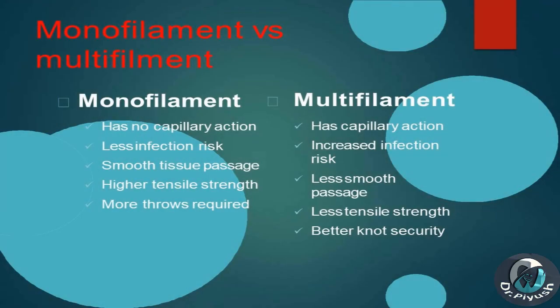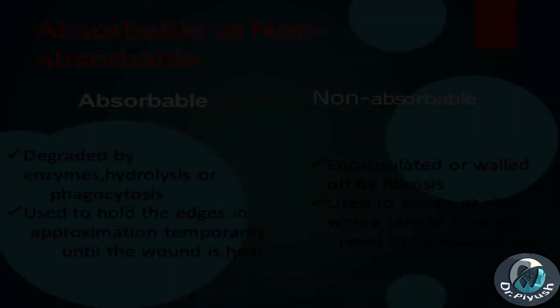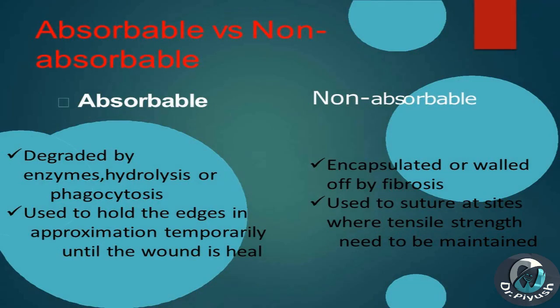Monofilament vs. Multifilament. Monofilament has no capillary action, less infection risk, smooth tissue passage, higher tensile strength, but more throws required. Multifilament has capillary action, increased infection risk, less smooth passage, less tensile strength, but better knot security.